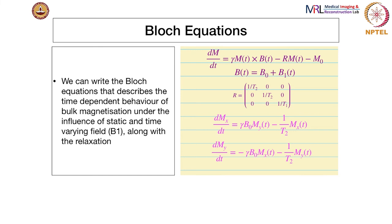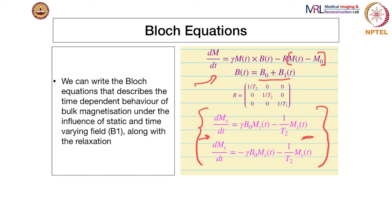Putting all this together, we wrote this equation M cross B = dJ/dt for magnetization in a static magnetic field. Now if we take into account all these factors — including B0 and B1 — we can write down the equations of motion. These are called the Bloch equations. These are differential equations that show how Mx, My, and Mz evolve in the presence of B0 and B1, and after B1 is removed, how the system behaves. That is when we start the imaging process, and these equations determine your source of contrast.